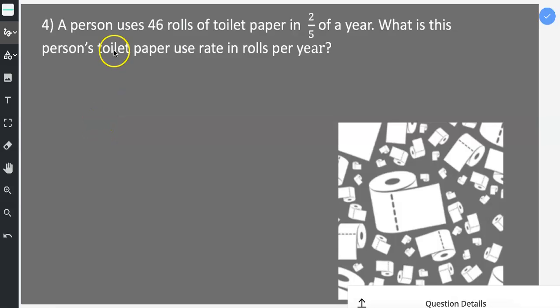Problem number four. A person uses 46 rolls of toilet paper in two-fifths of a year. What is this person's toilet paper use rate in rolls per year?